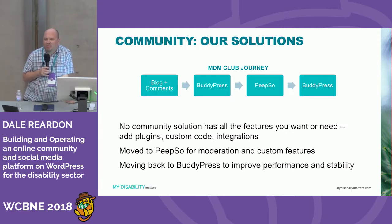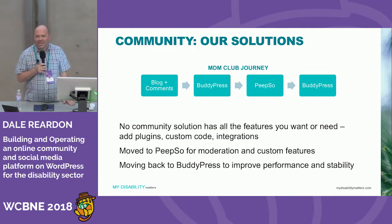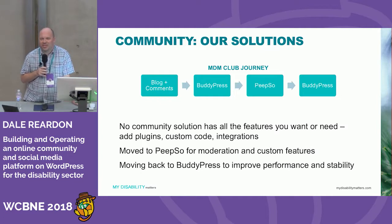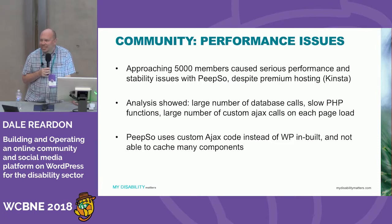We have been going with Peepso until about three months ago - it was performing well, but now we've got up to about 4,800 members. Despite using very powerful hosting, it has started having severe performance issues, and that's actually been the main complaint from our members - the site was too slow or timing out. Performance testing revealed that the way some of the add-ons for Peepso were written, they were not going to be efficient as our community grew and would require a lot of recoding. That has led us back to the decision to swap back to BuddyPress.